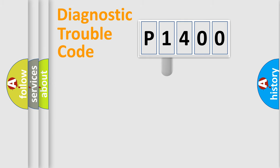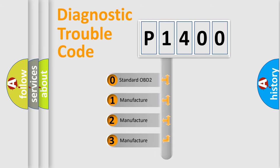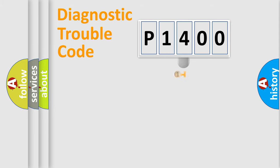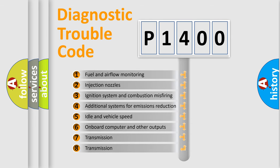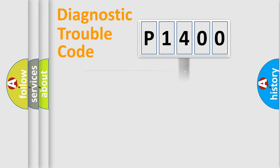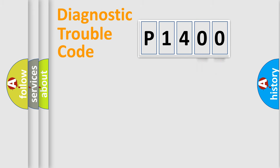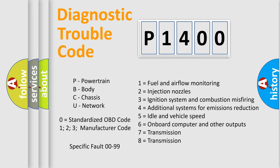This distribution is defined in the first character of the code. If the second character is expressed as zero, it is a standardized error. In the case of numbers 1, 2, or 3, it is a more specific expression of a car-specific error. The third character specifies a subset of errors. This distribution is valid only for the standardized DTC code, and only the last two characters define the specific fault of the group.